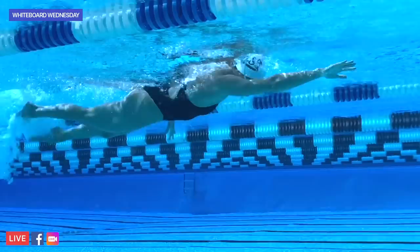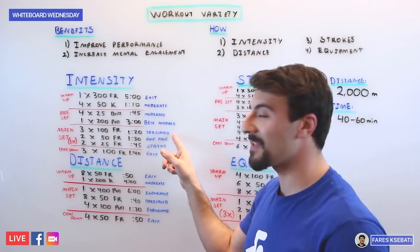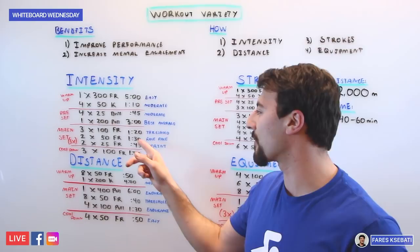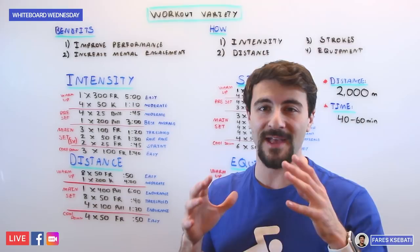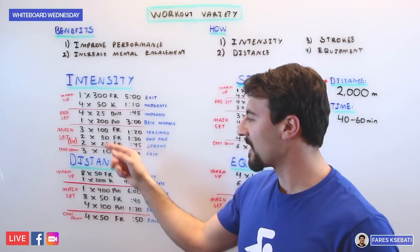So we're going 3x100s freestyle on the 1:20—that's a threshold type of set, short rest—followed by 2x50s freestyle on the 1:30, a lot more rest at a race pace effort, high intensity, maximum speed. And we're following that up with 2x25s freestyle on the :45, and these are a sprint, your max power and speed potential. You're going to go three rounds of that, and you're going to finish up with 3x100s freestyle easy energy zone.